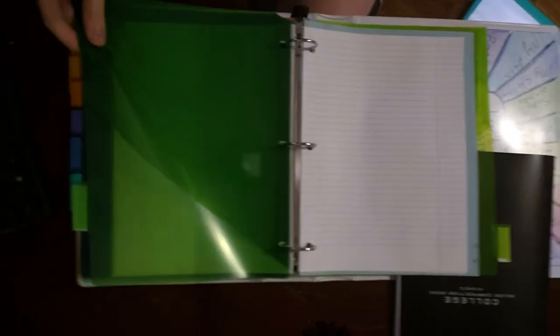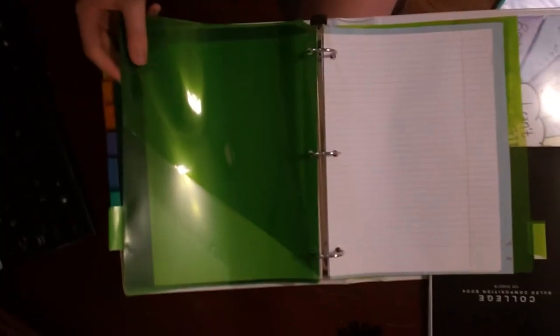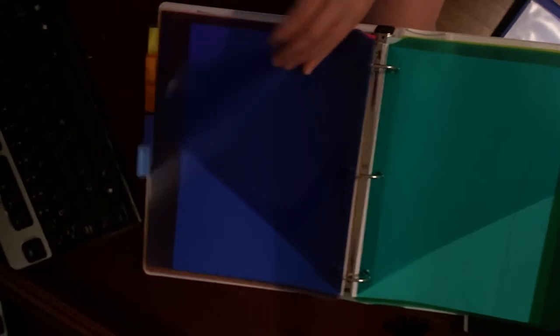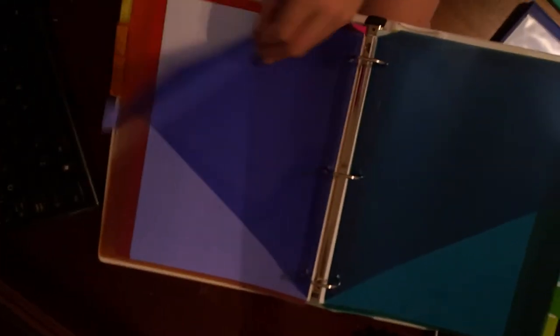Then I have my spelling divider and that just has notebook paper in it. Then I have my notes section which has nothing in it because we haven't taken any notes in class. Then I have my vocabulary which has nothing in it. Then my writing and we have paper in my writing section also.